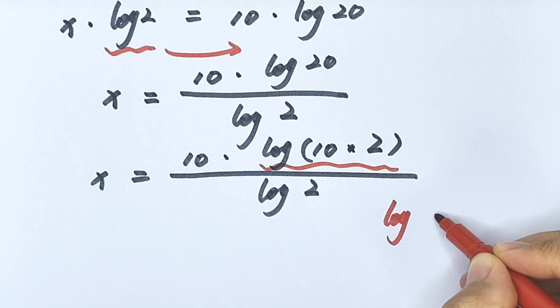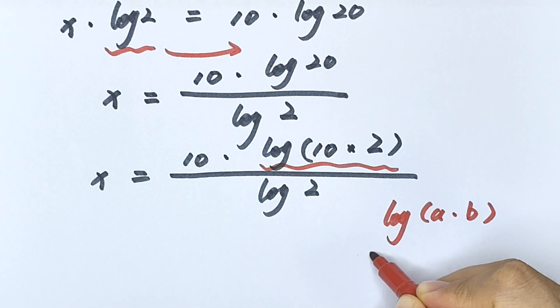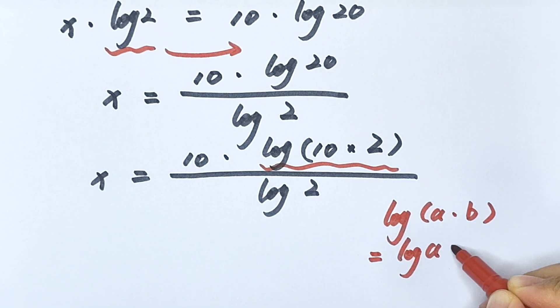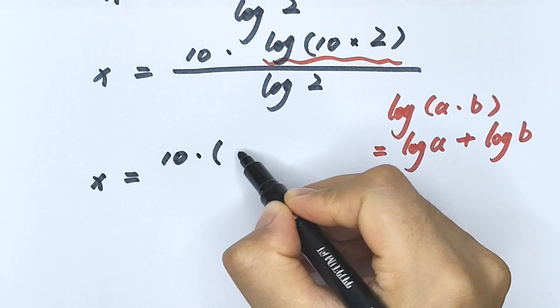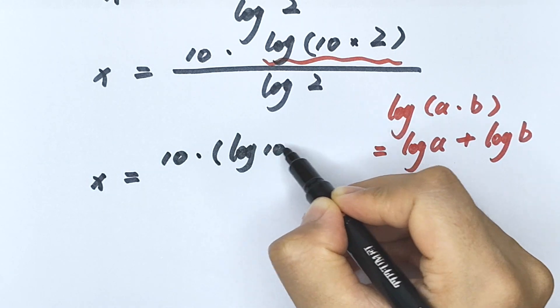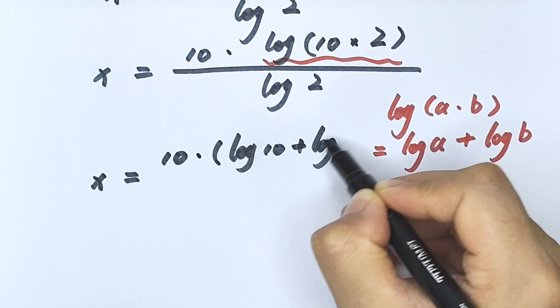Log a times b equals log a plus log b, so x equals 10 times log 10 plus log 2.